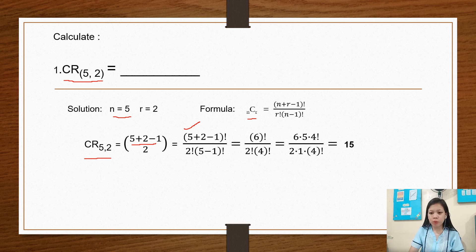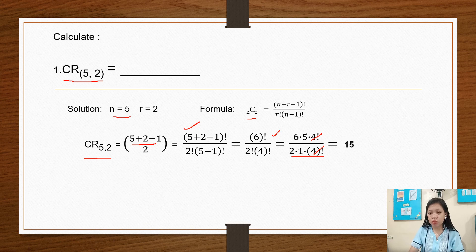Simplifying, we have 6! / (2! × 4!). Expanding 6!: 6 × 5 × 4! / (2 × 1 × 4!). We cancel out 4!, leaving 6 × 5 / (2 × 1) = 30 / 2 = 15.